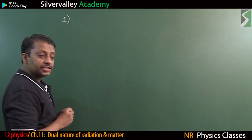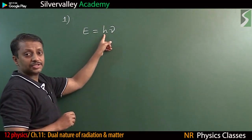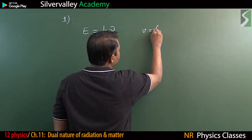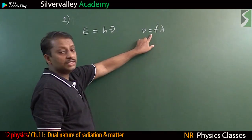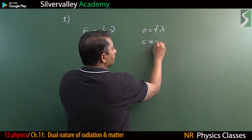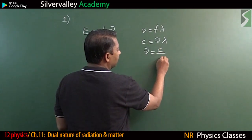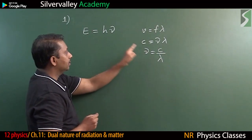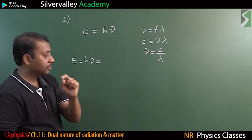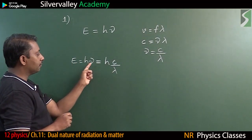Energy of a photon: the energy of a photon of frequency nu is given by h·nu, where h is Planck's constant and nu is frequency. We know V = f·lambda from the 11th standard waves chapter. For radiation, speed is C, so nu = C/lambda. This gives energy E = h·nu, and also E = hc/lambda. So we have energy in terms of frequency and energy in terms of wavelength.